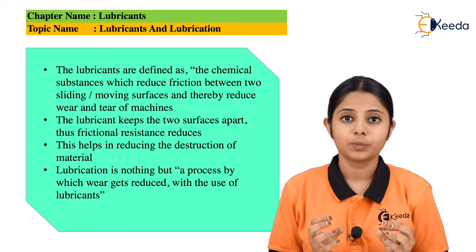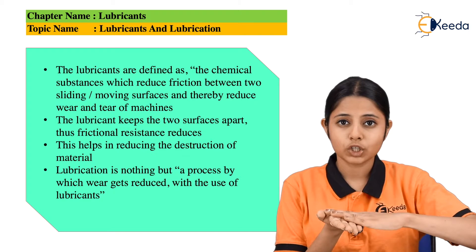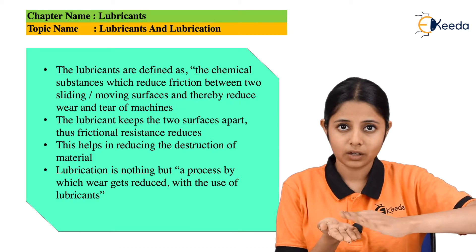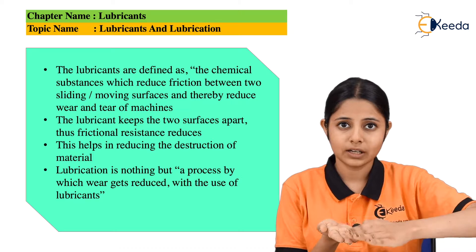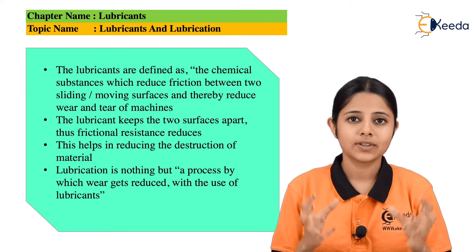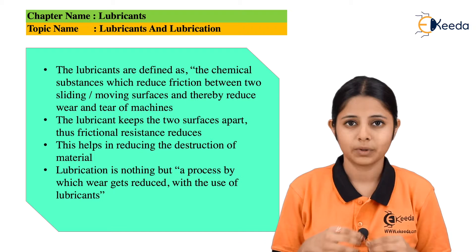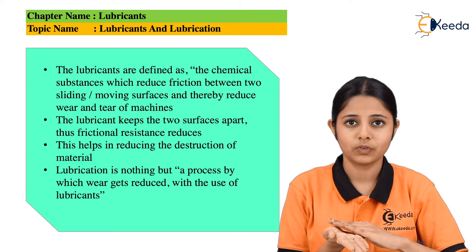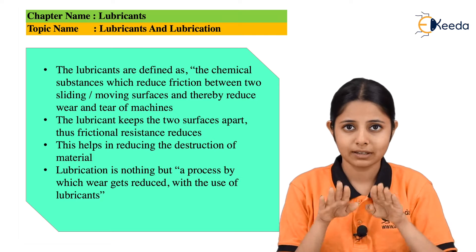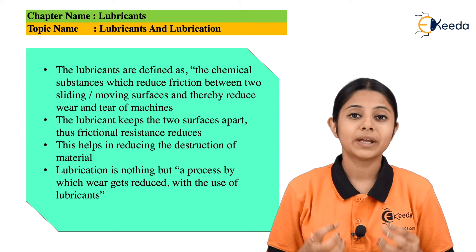The main work of the lubricant is to keep the two frictionating surfaces apart from each other. Since it keeps them apart, the wear and tear and friction between these two surfaces reduces. This entire process is known as lubrication — the process in which the wear and tear between two frictionating or moving surfaces gets reduced with the help of a lubricant.